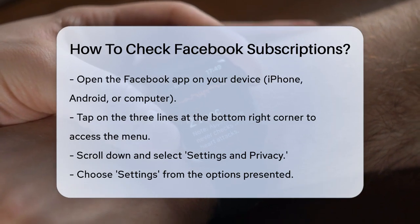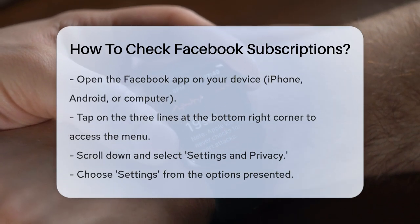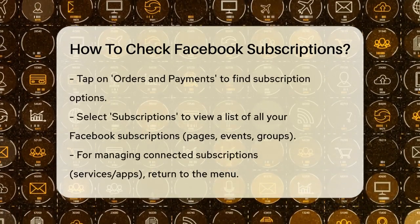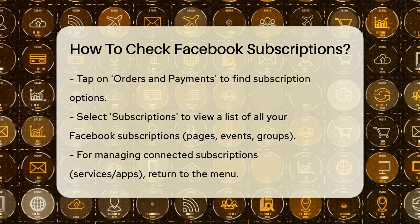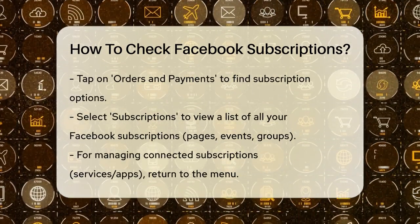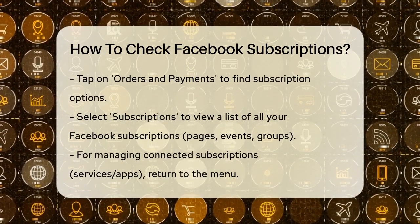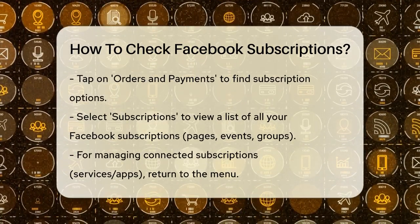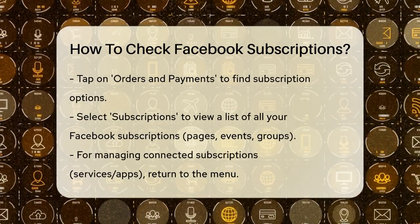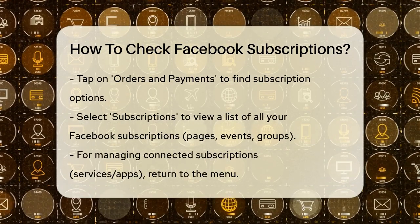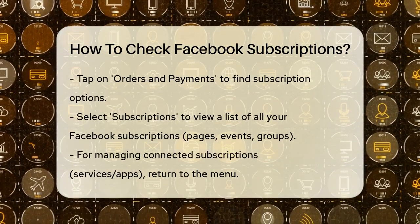Once you're in the app, tap on the three lines at the bottom right corner to open the menu. Scroll down a bit in the menu and tap on Settings & Privacy. This will bring up several options like Settings, Activity Log, and Orders & Payments.